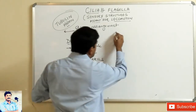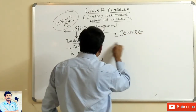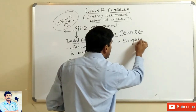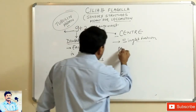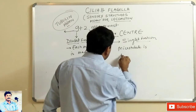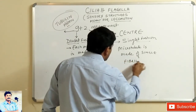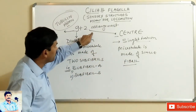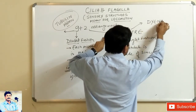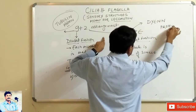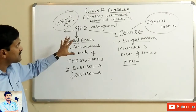The 2 microtubules at the center are not present in doublet fashion but in singlet fashion — each microtubule is made of a single fibril. These two central microfibrils are made up of dynein protein. So the central fibers are made of dynein protein. This arrangement is called the 9+2 arrangement.